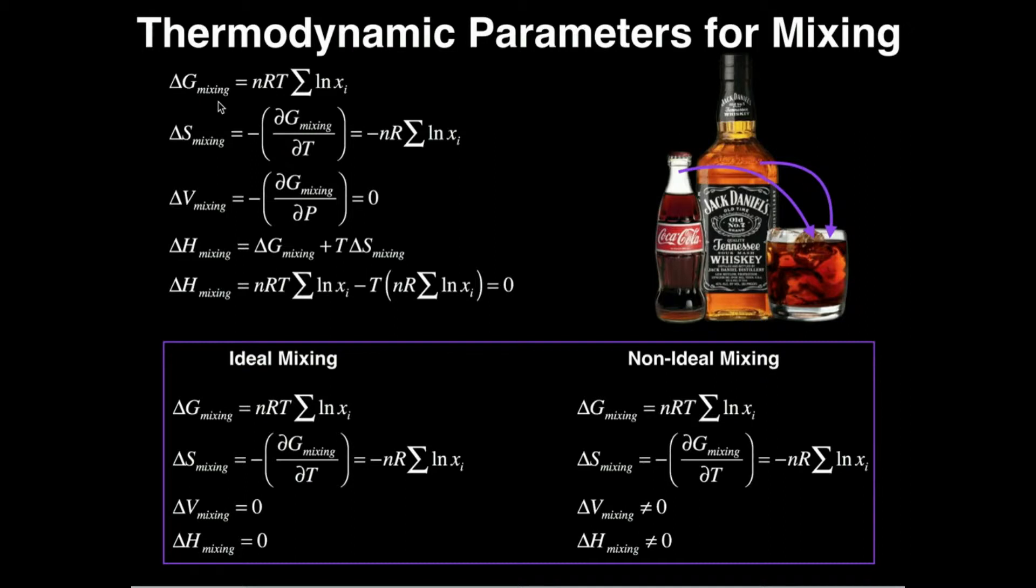If we want to calculate the free energy change for taking these two components and mixing them together in some proportion, we can calculate the delta G of mixing. The first thing we'll want to do is find out what the mole fractions are of each component. Suppose we mix a mole fraction of whiskey of 0.4 and a mole fraction of Coke of 0.6. What we would do is take the natural log of the first one, 0.4, and this is summation notation, so we take the natural log of the other one, 0.6, and whatever we get for that, we then multiply by the temperature, multiply by the gas constant, and multiply times the total number of moles.